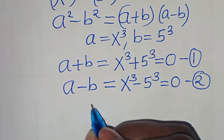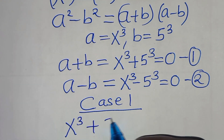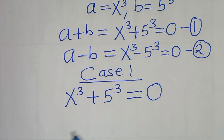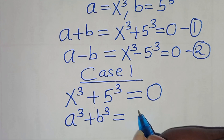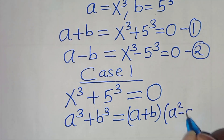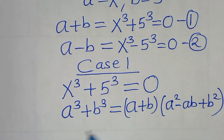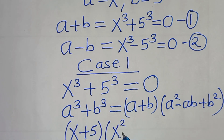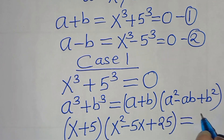Starting with equation 1 as case 1: x to the power of 3 plus 5 to the power of 3 equals 0. This is the sum of two cubes, expressed as a³ + b³ = (a + b)(a² − ab + b²). Applying this identity, we get (x + 5)(x² − 5x + 25) = 0.